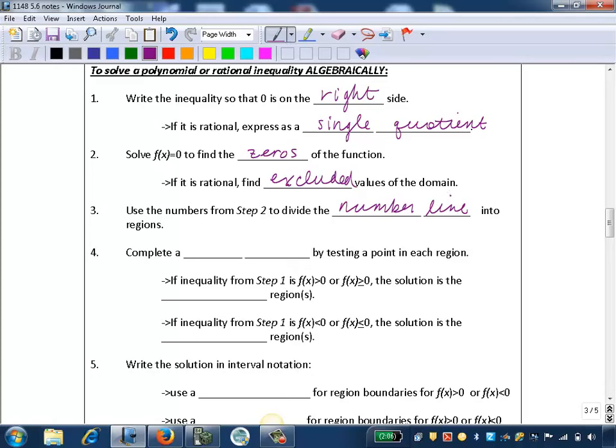Step 4: We will complete a sign chart by testing a point in each region. So we're going to use our number line and those regions that we divided into to make a sign chart.